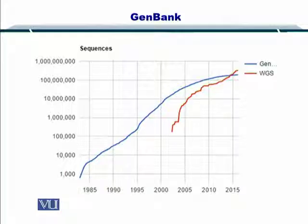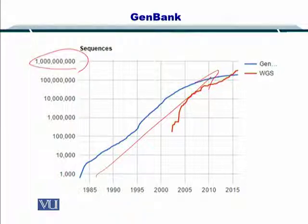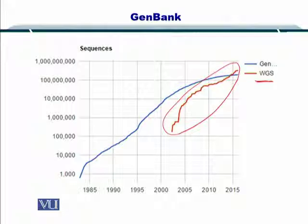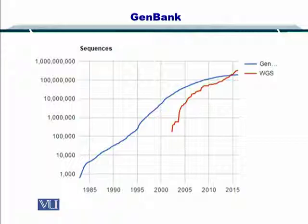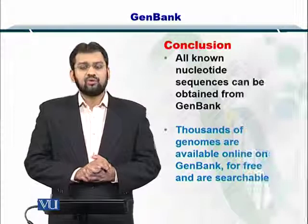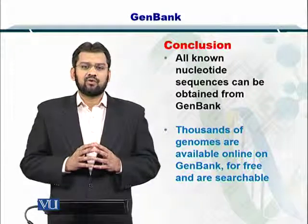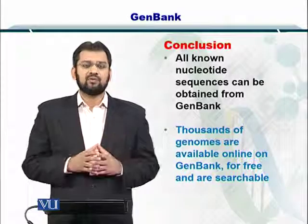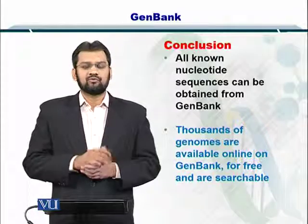It is very important to realize that this information is growing very fast and rapidly. The blue line shows the growth of this information, and as you can see, it is closing in on a billion sequences at the moment. The red line, as shown here, represents whole genome sequencing, which is clearly catching up very fast — this is the result of next-generation sequencing instrumentation and protocols. This information is stored separately from GeneBank but is also available for your analysis online. In conclusion, the nucleotide sequences of all known organisms and species that have been sequenced are available at GeneBank.